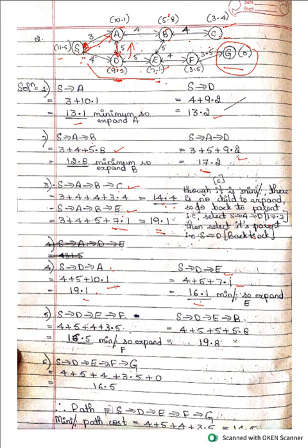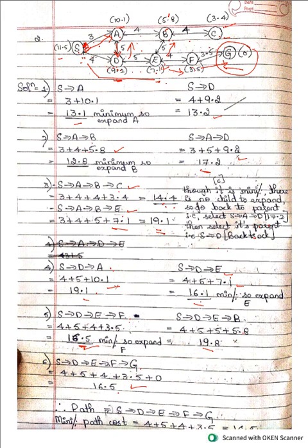From E you can reach B and F. S→D→E→F gives 19.8 and S→D→E→B gives 16.5. Minimum is 16.5, so expand F. From F you can reach G: 4 + 5 + 3.5 + h(G) 0 = 16.5. We've reached the goal G.